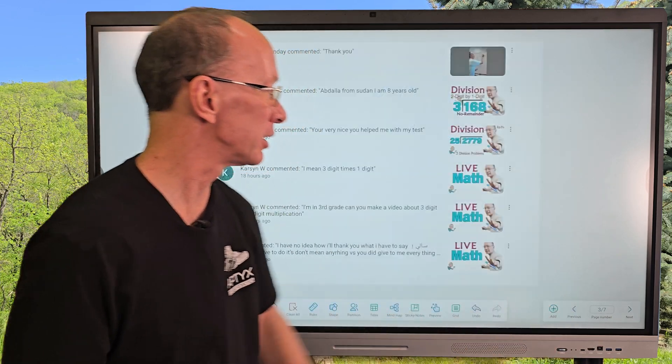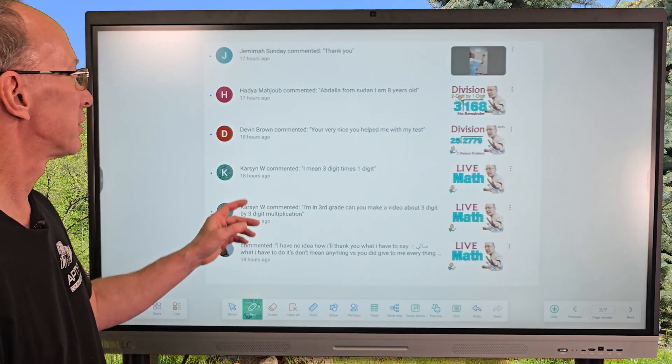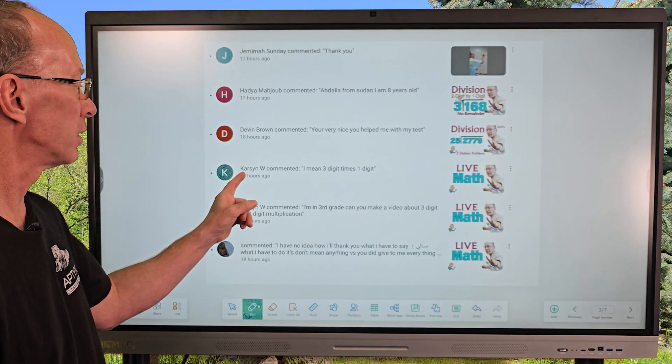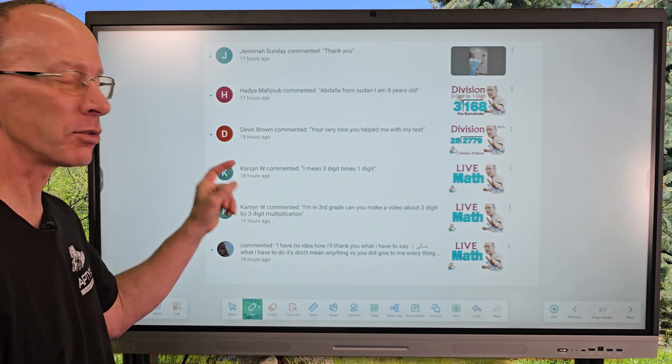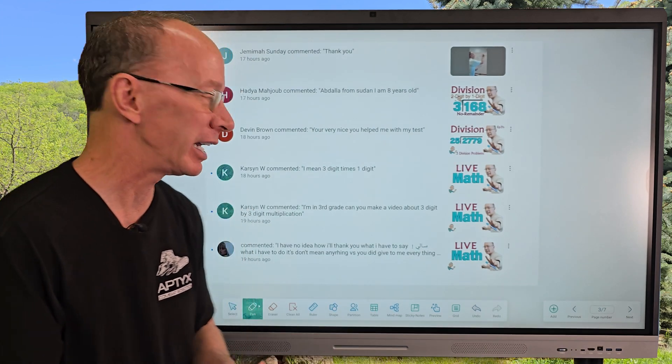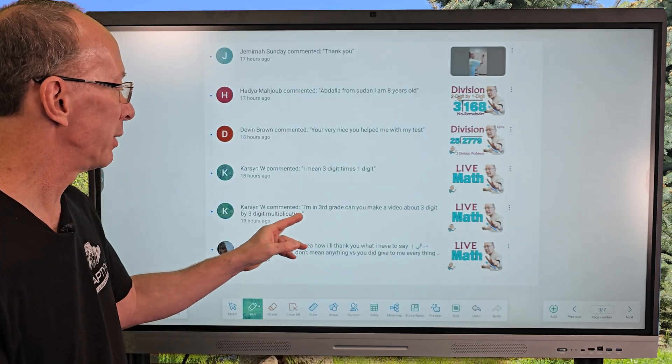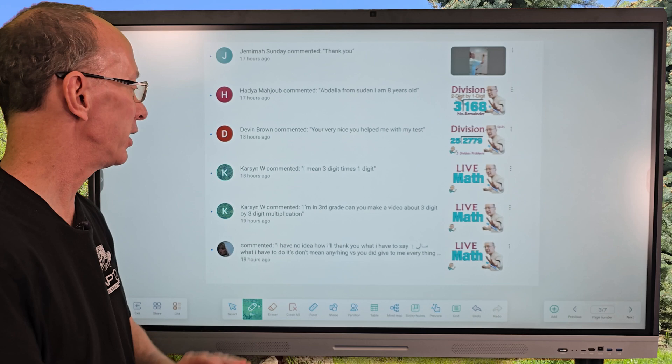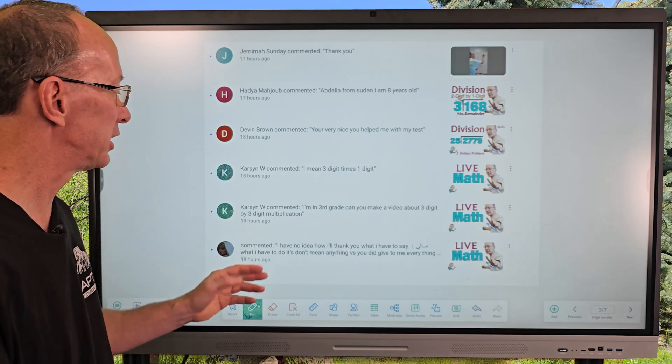I got that special request from a subscriber. It says right here, I think it's Karsyn, K-A-R-S-Y-N. I'm sorry if I mispronounced the name there. It says, I'm in third grade. Can you make a video about a three-digit by three-digit multiplication?